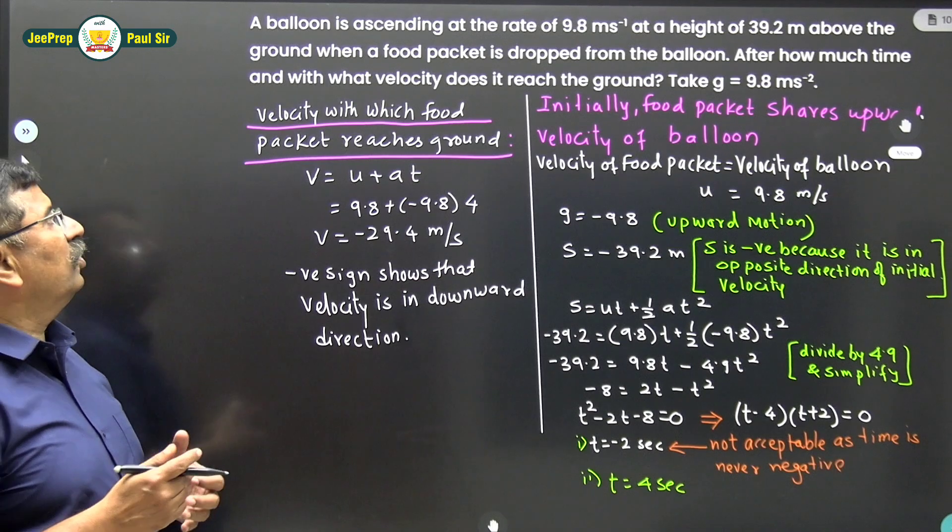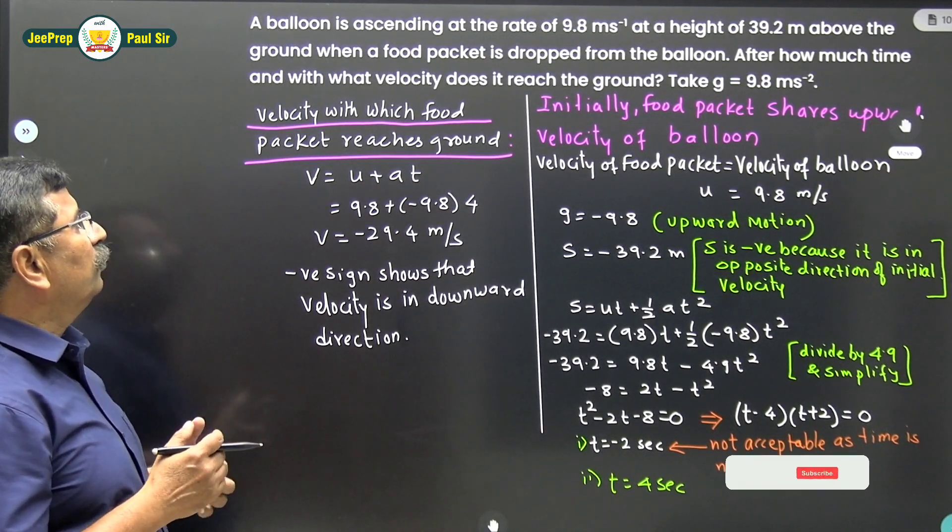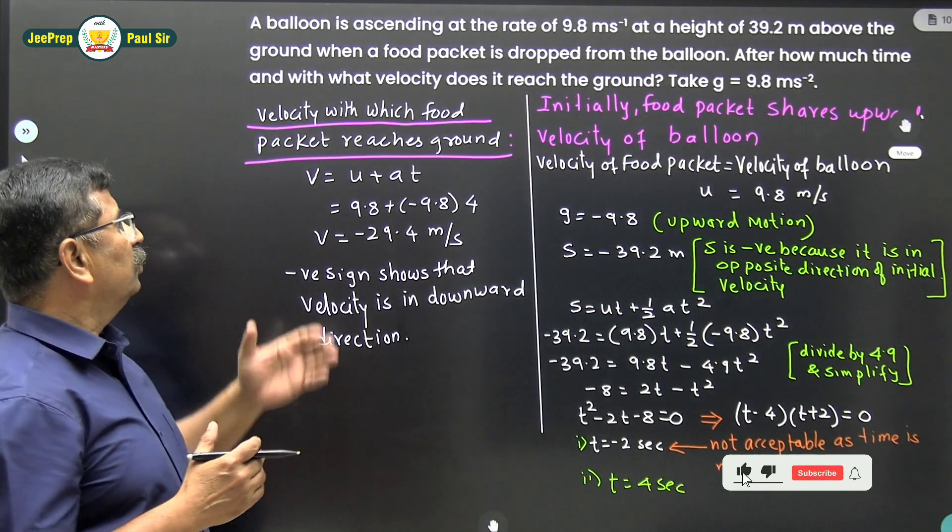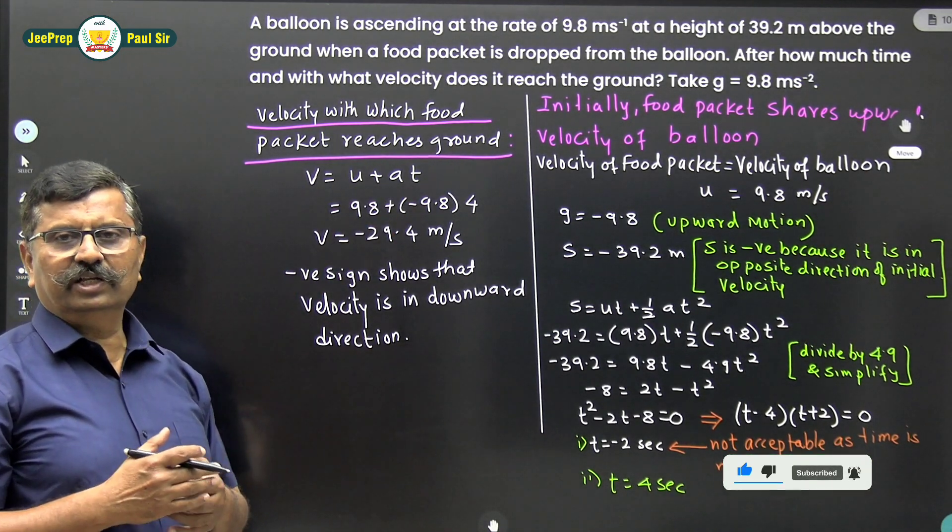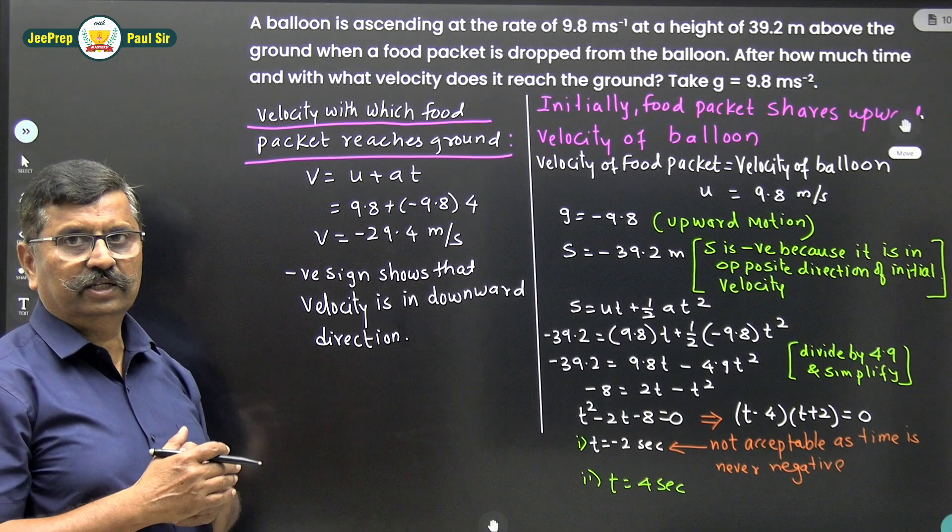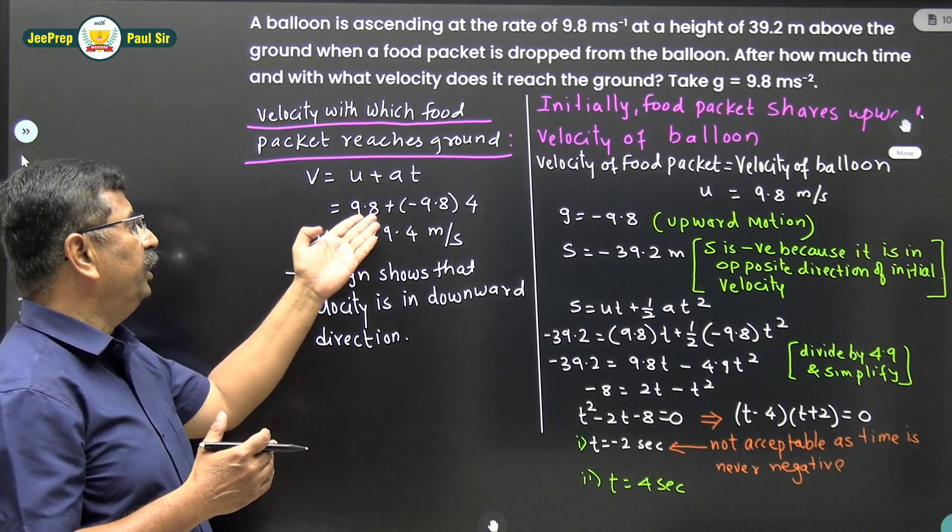Now we want to find out the velocity with which the food packet reaches the ground. Therefore v equals u plus at. The initial velocity of the food packet is the velocity of the balloon, that is 9.8.